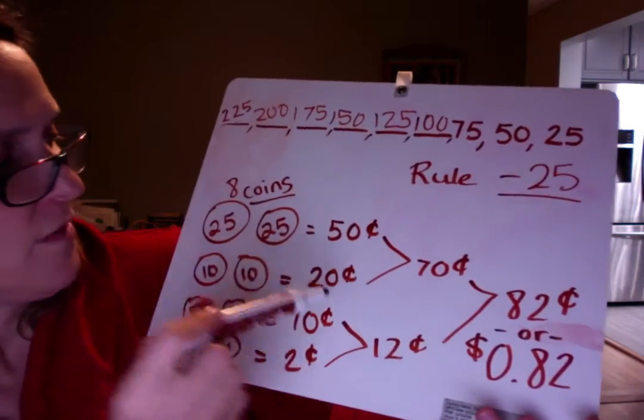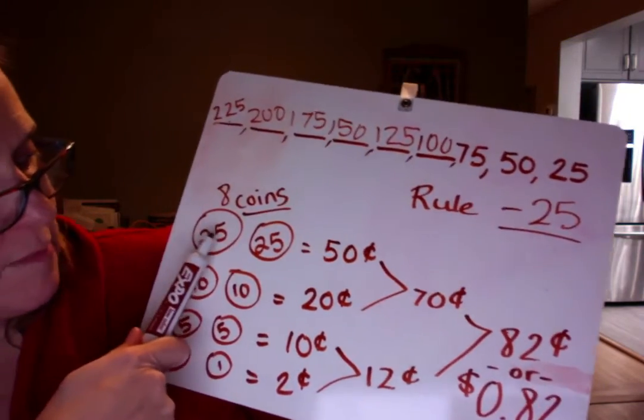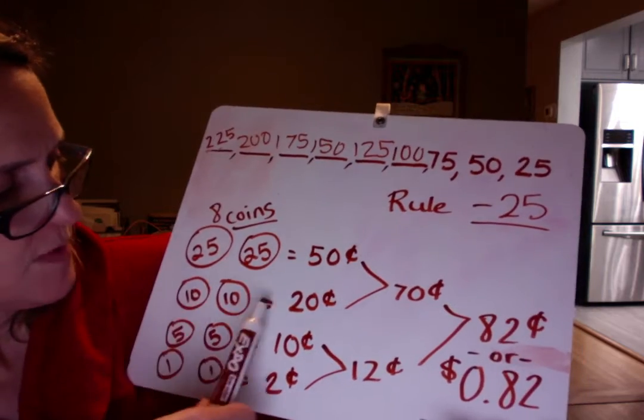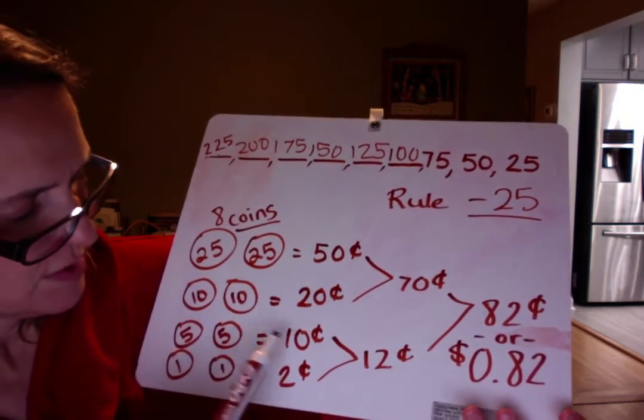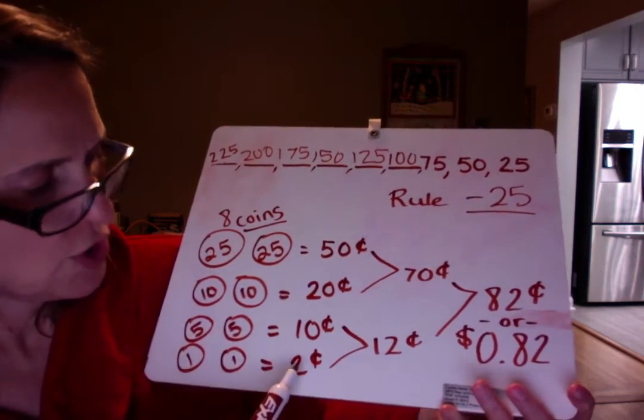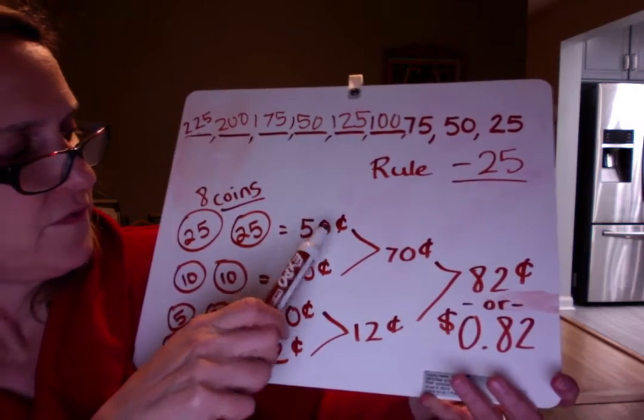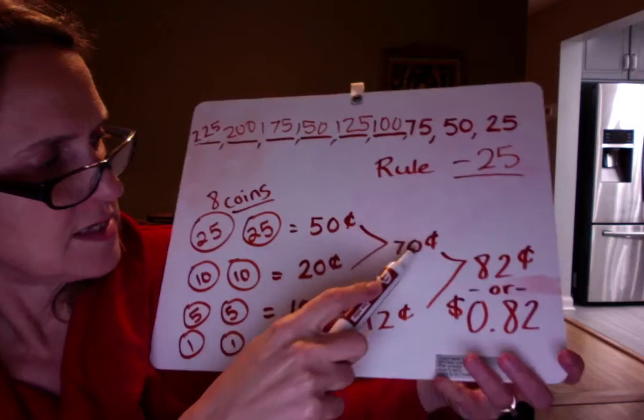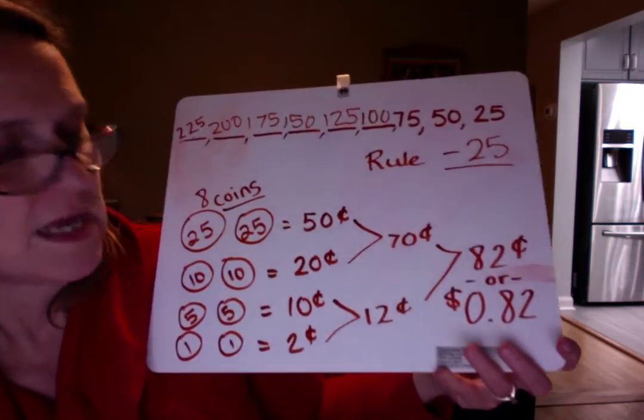I added it up a different way for you just to show you another way to think about it. You could add up your quarters, that's 50. Your dimes, 20. Your nickels came to 10 and pennies were 2. So then I went 50 and 20 makes 70 and 10 and 2 make 12. And then I said 70 and 12 make 82. Just another way to count your coins.